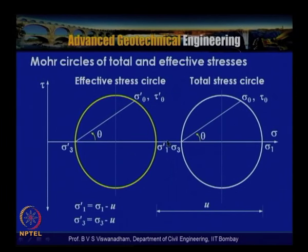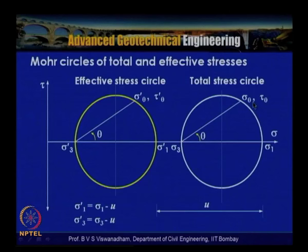From the diagram, the major and minor principal planes do not change between total and effective stress conditions. Only the normal stresses shift by the pore water pressure u, while the shear stresses remain unchanged (tau dash theta equals tau theta, sigma dash theta equals sigma theta minus u). This concludes the discussion on Mohr circles, pole point interpretations, principal planes, and the relationship between total and effective stress Mohr circles.